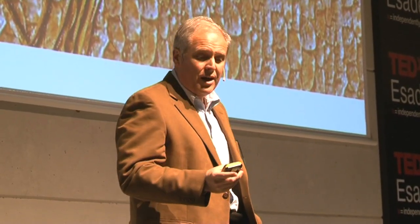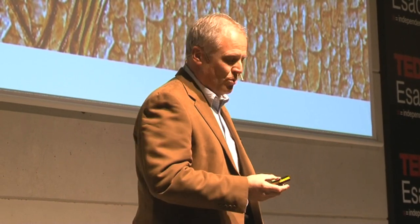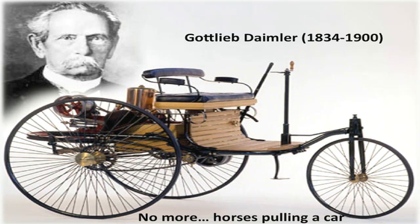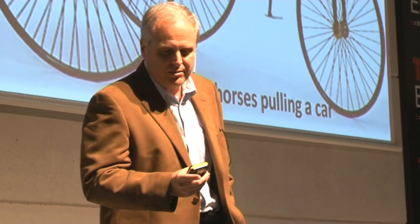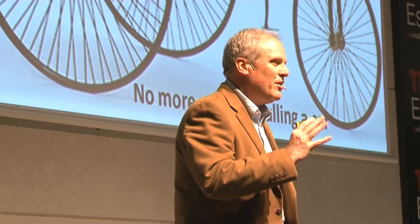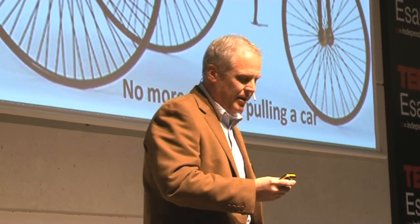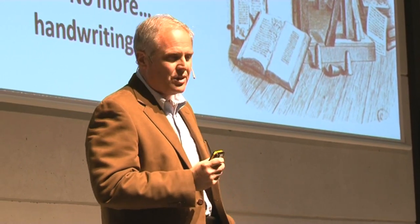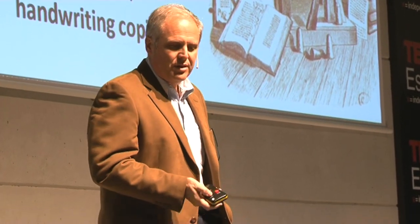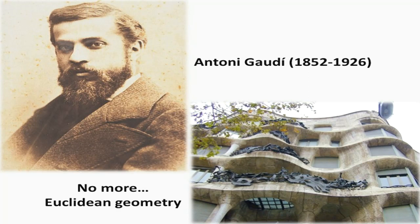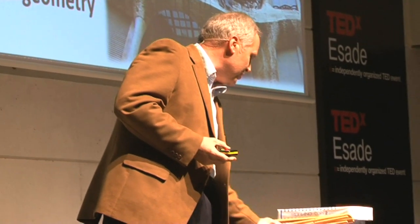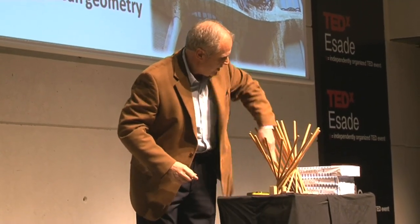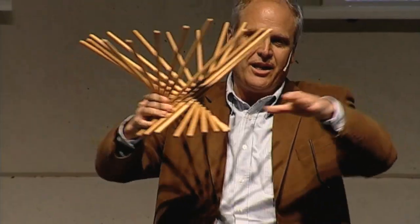As you can see here, the car is a very old invention — 5,000 years old or more. But it needed a serious disruption, which was taking the horse away. Mr. Daimler did it — he thought, let's take the horses out of it. Another big disruptor was Gutenberg, who said no more handwriting print copies. Another disruptor was Antonio Gaudi, who said no more Euclidean geometry — no more cubes, cylinders, or prisms. He wanted to go to the next level: fourth-degree geometry. You can get those kinds of curves using straight lines.